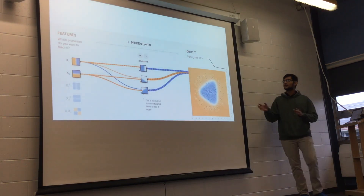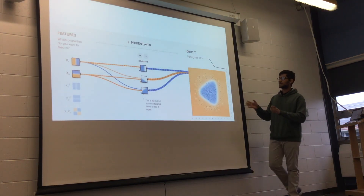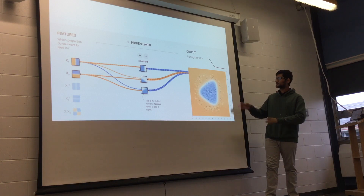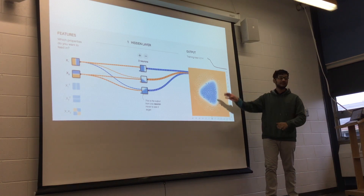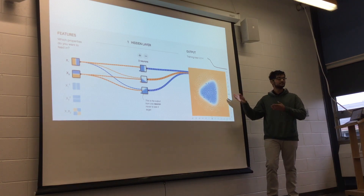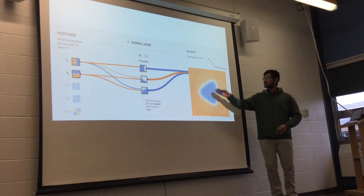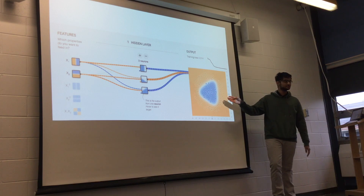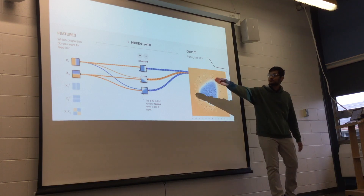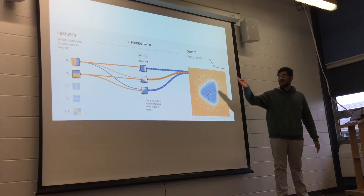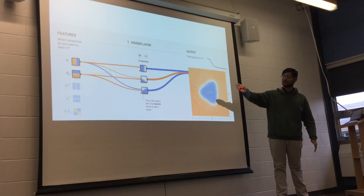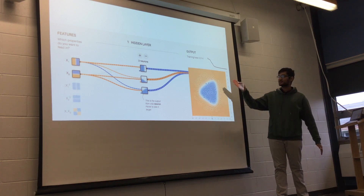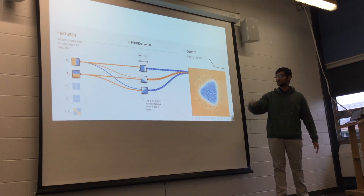So this is what a neural net is doing underneath the hood. This is all your data — you're trying to classify it as blue or orange, a very complicated function. You start off on the left with two very simple functions: the x value and the y value, positive or negative.